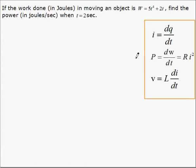Looking at our equations, we're asked to find power, so we're going to choose this equation. Power is the derivative of work with respect to time, or it can also be expressed as the resistance through a resistor multiplied by the current squared.